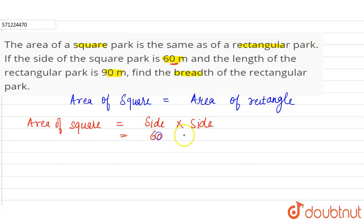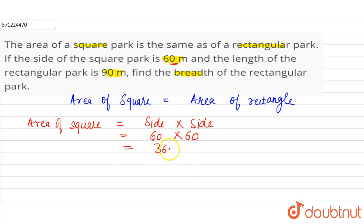The side is given as 60 meters, so 60 into 60. To calculate 60 into 60, just calculate 6 into 6, which is 36, and then add two zeros. So the area of the square is 3600 square meters.